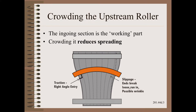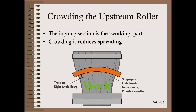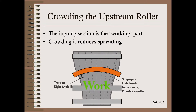As we learned in our Web 101 class, the ingoing section of the system is the working section. Reducing that span length by crowding the upstream roller reduces the amount of expansive spreading work that is available.